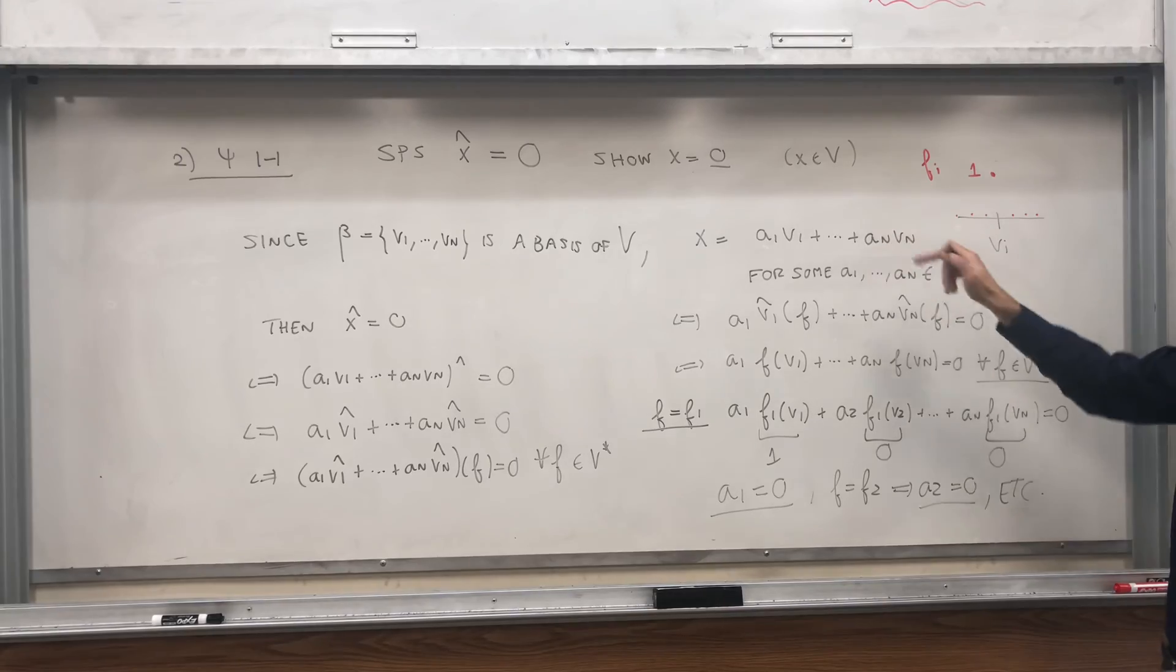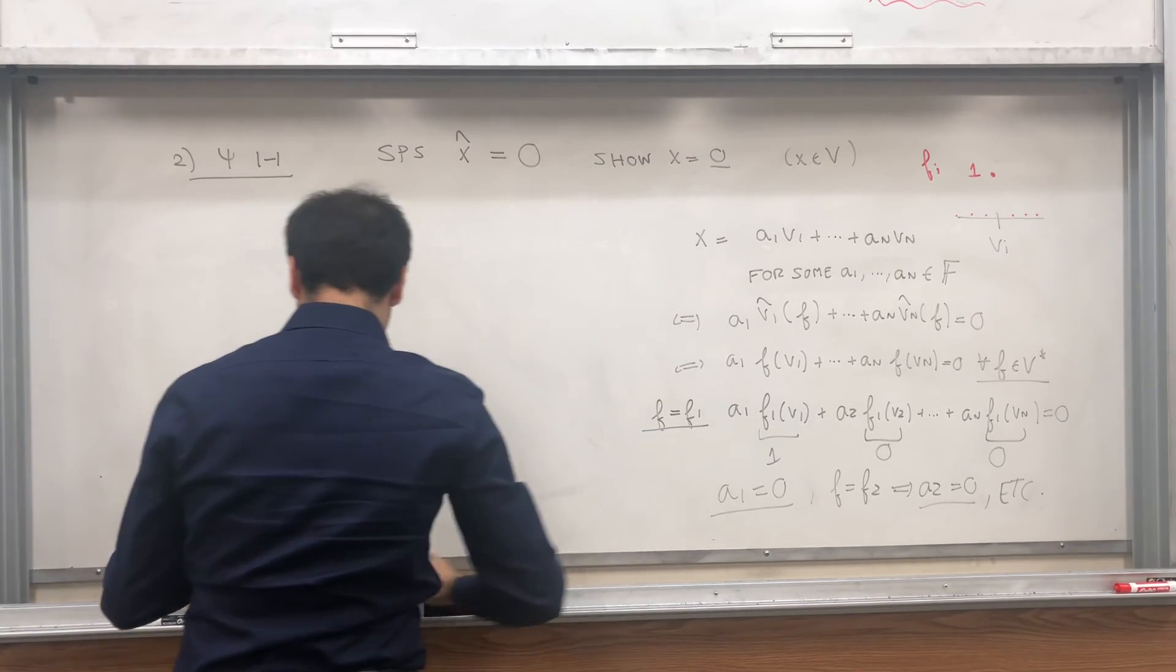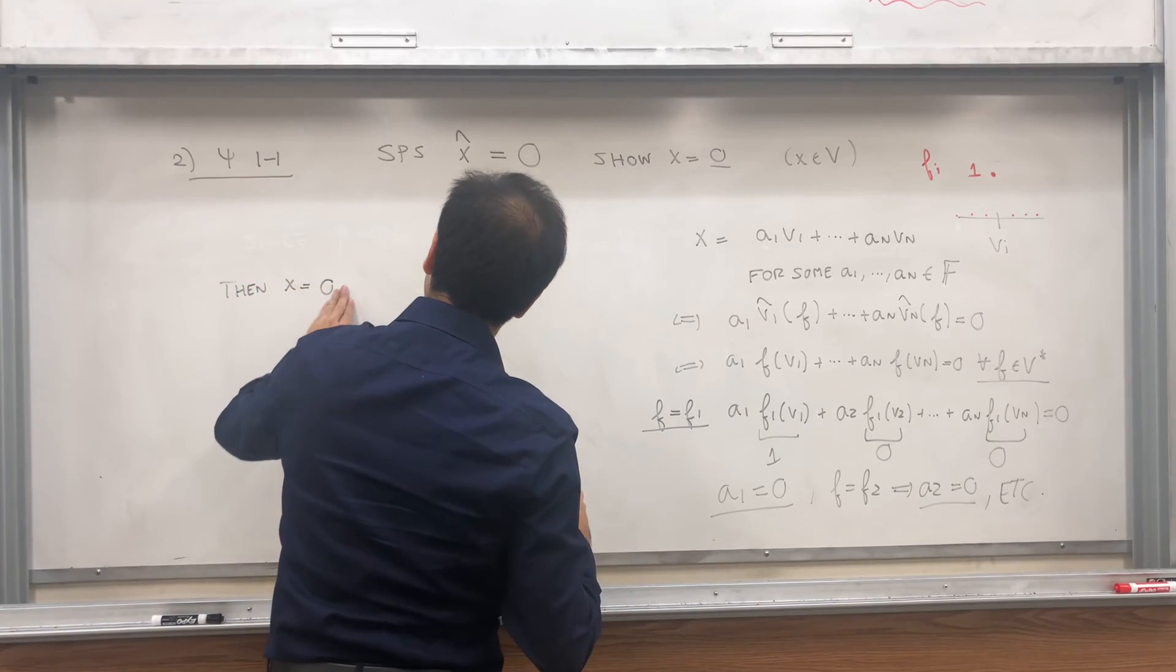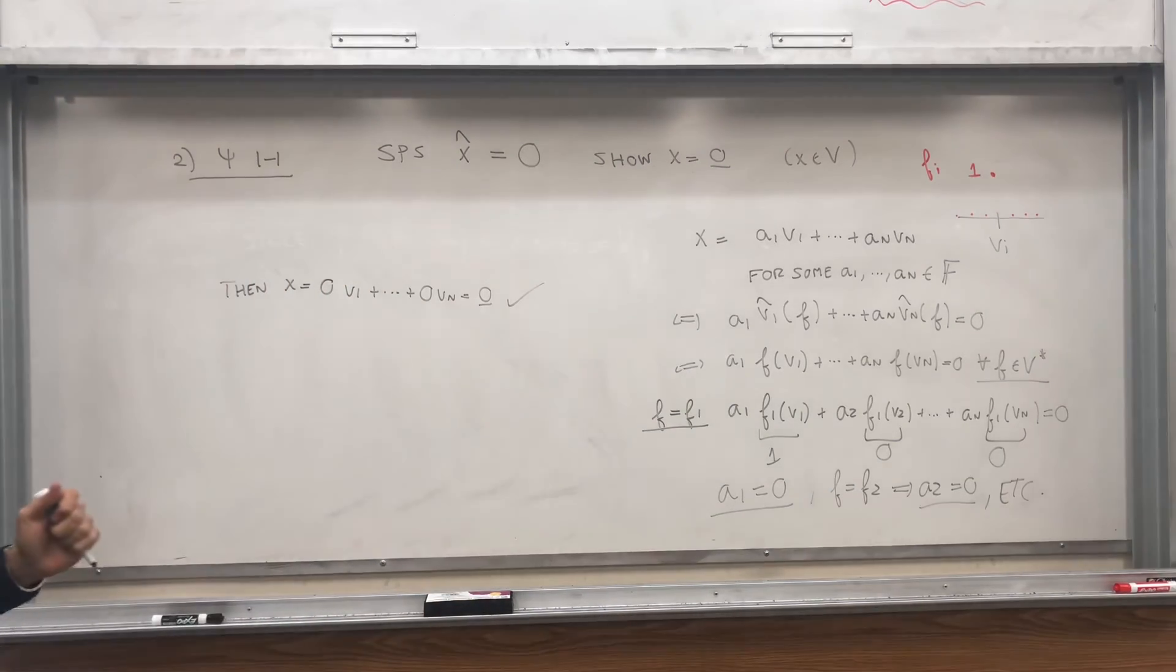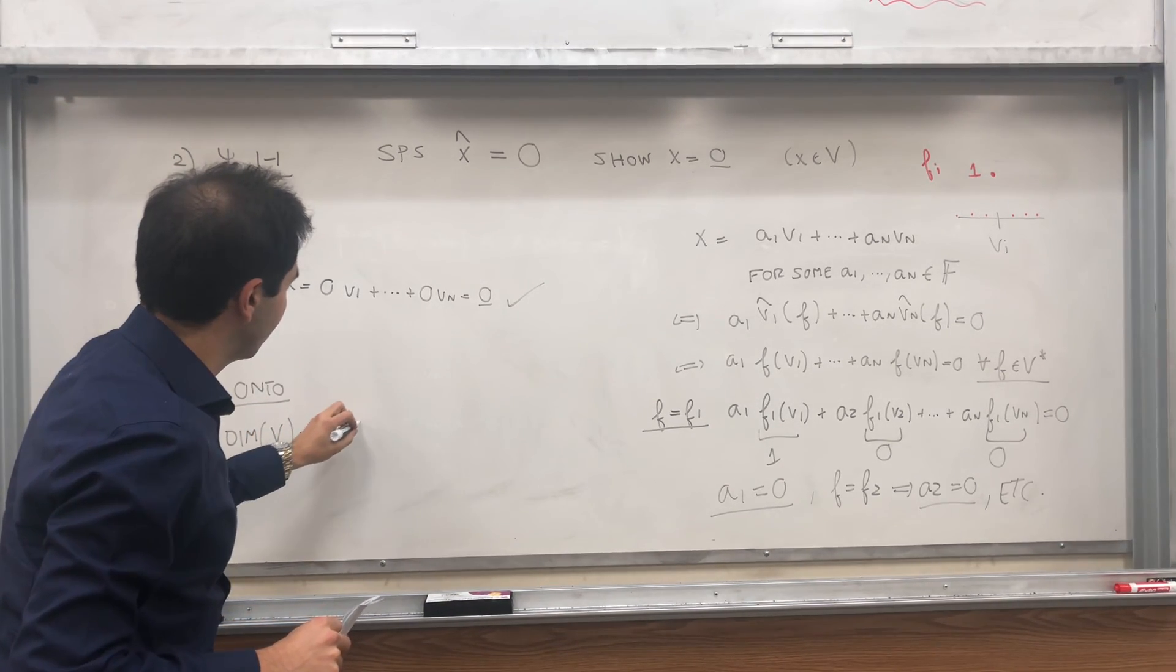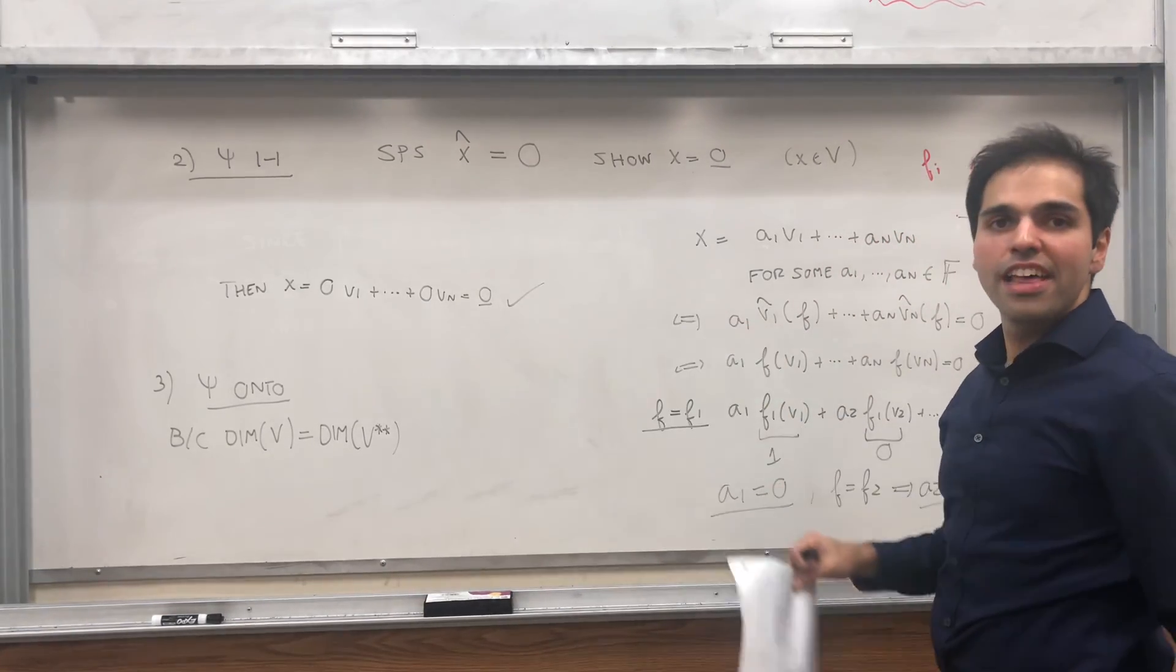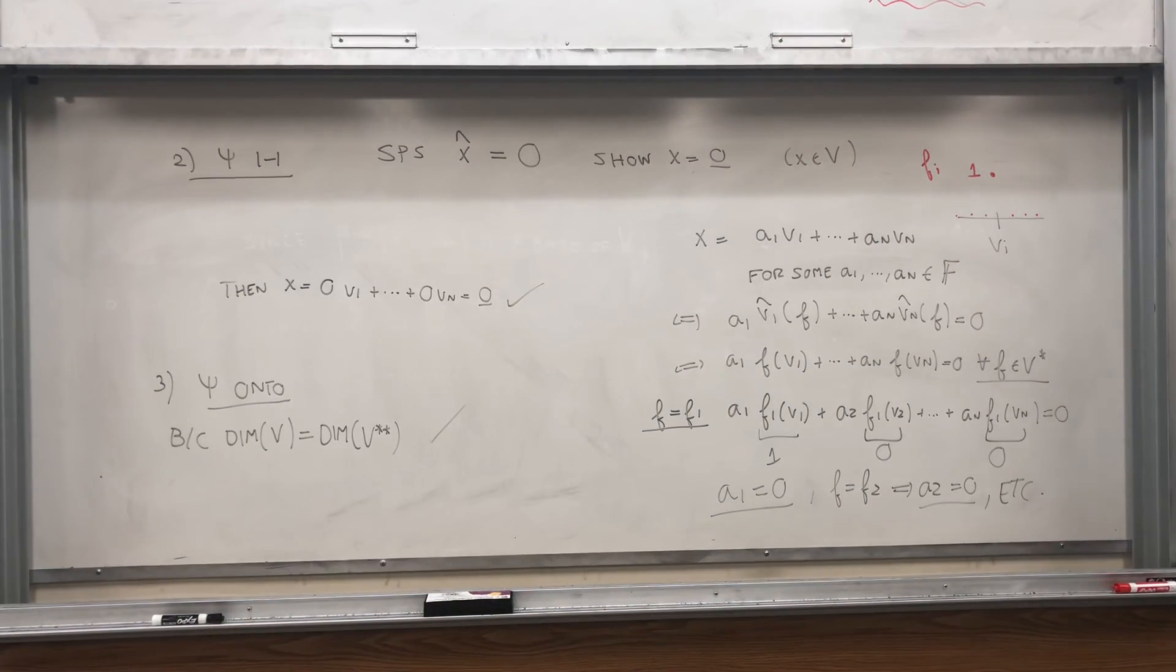x is zero v1 plus zero vn. So in other words, x is the zero vector. So then x is zero v1 plus dot dot dot plus zero vn, which is the zero vector. Which is just what we want. So in fact, Psi here is one to one, and therefore Psi is onto because simply the dimensions match. So if you have a one to one linear transformation from two finite dimensional vector spaces of equal dimension, then the linear transformation is onto. And therefore, we do have a nice isomorphism between those two spaces.